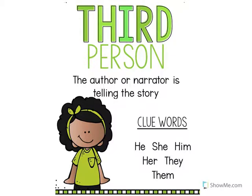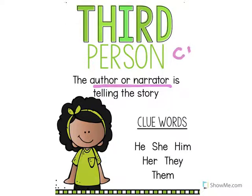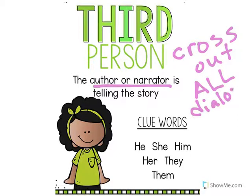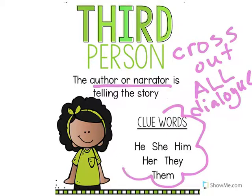Now looking at third person point of view — that's a lot different than first person. First person was when there's a character in the story who is the narrator. Notice the difference: third person is when the author or narrator is telling the story. Remember, if they're the ones who wrote the story, they're not actually participating in the events — they're like an outside observer. And again, it's really important to cross out all your dialogue, because that will get in the way of figuring out which point of view the story is written in. Just like first person, third person has clue words.